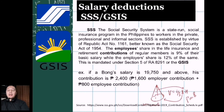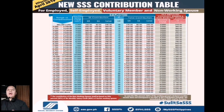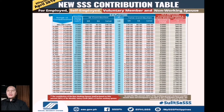For SSS, let's say Bong's salary is 19,750 and above — his total contribution is 2,400: 1,600 from the employer and 800 from the employee. The employer has to double the employee's contribution. This is based on the SSS contribution table, similar to the tax bracket system — wherever your salary falls determines your SSS contribution. You can get the contribution table from sss.gov.